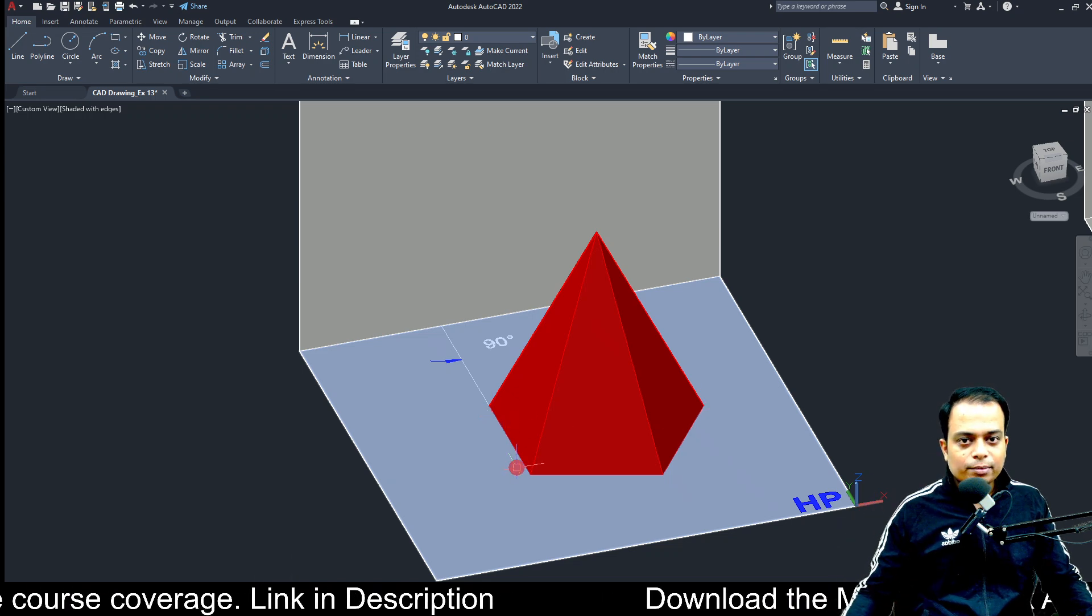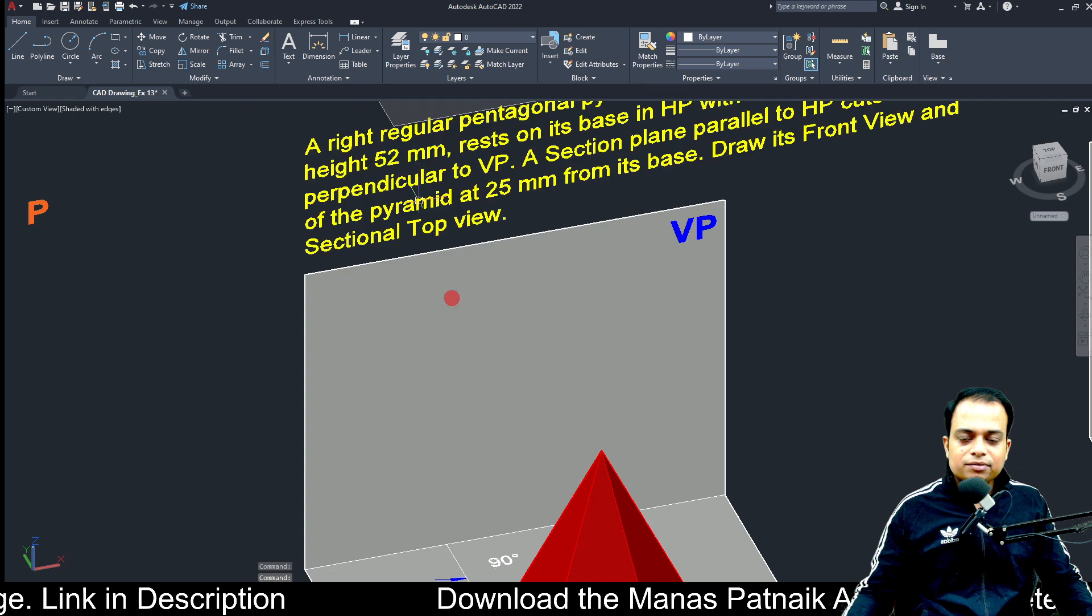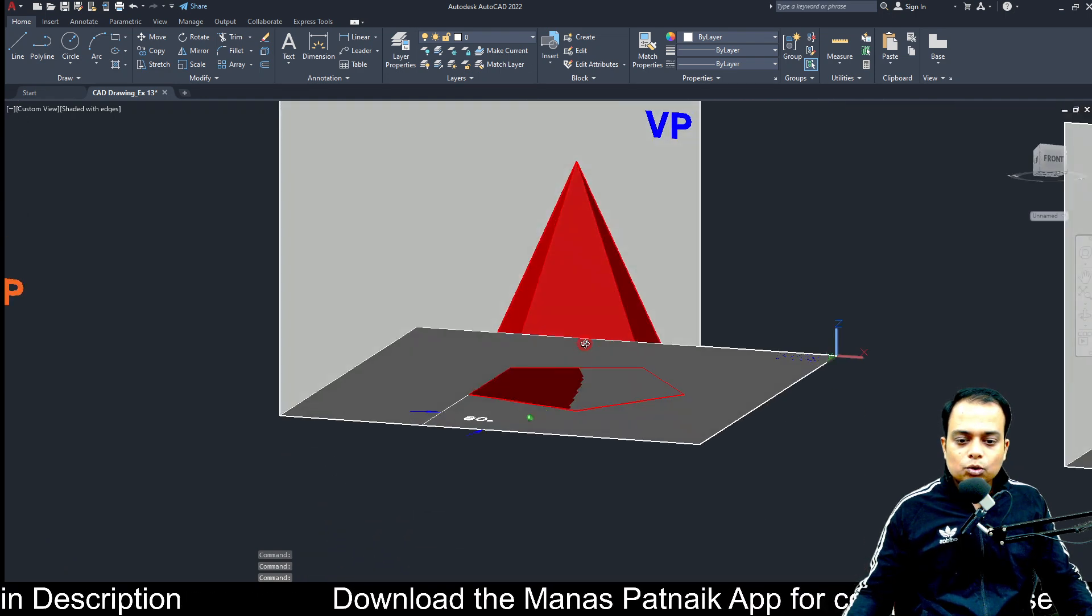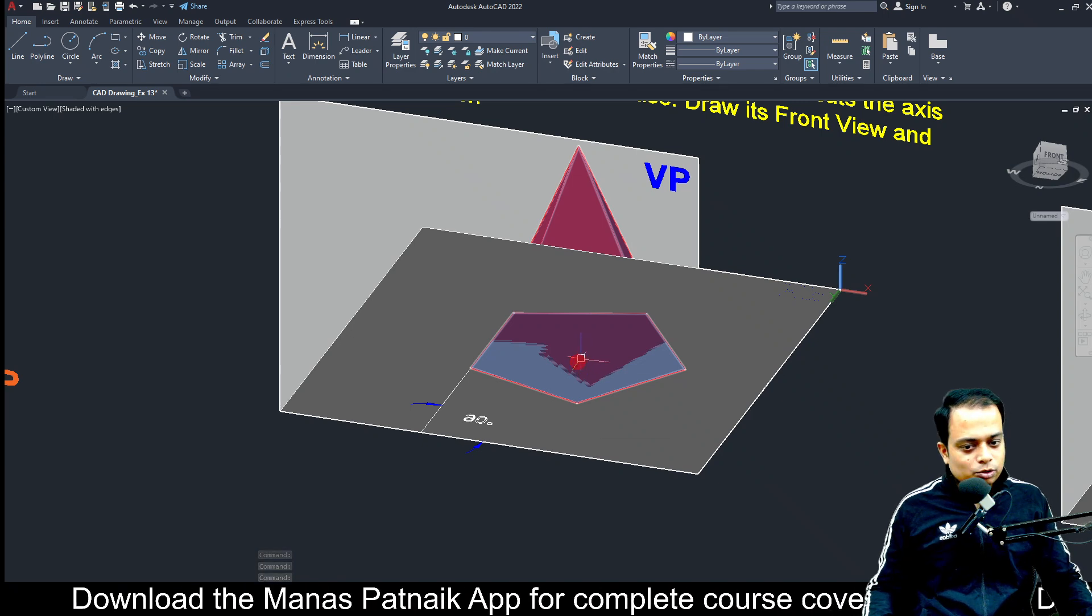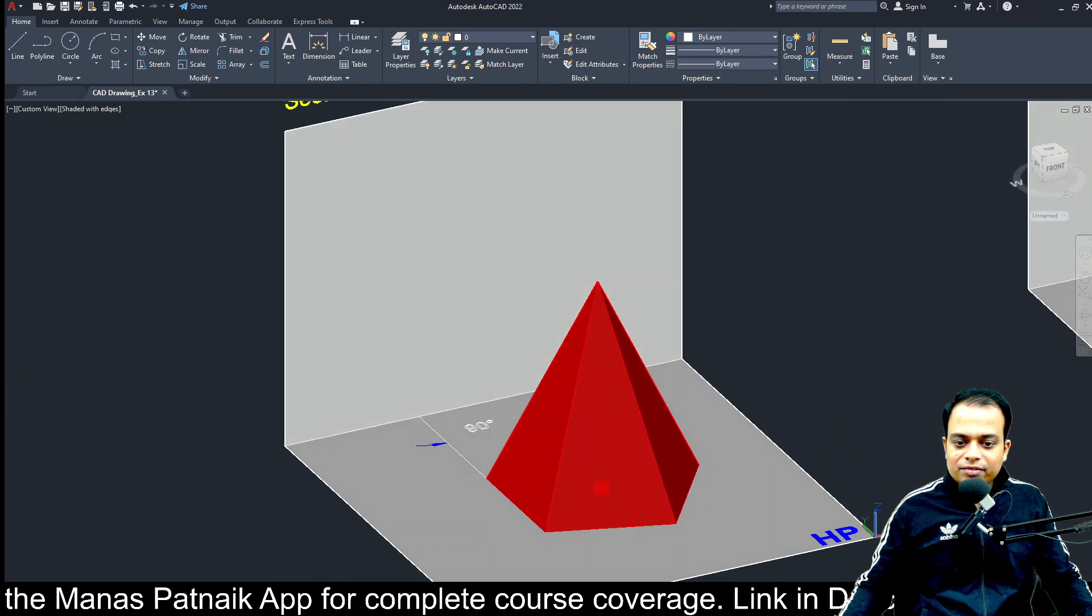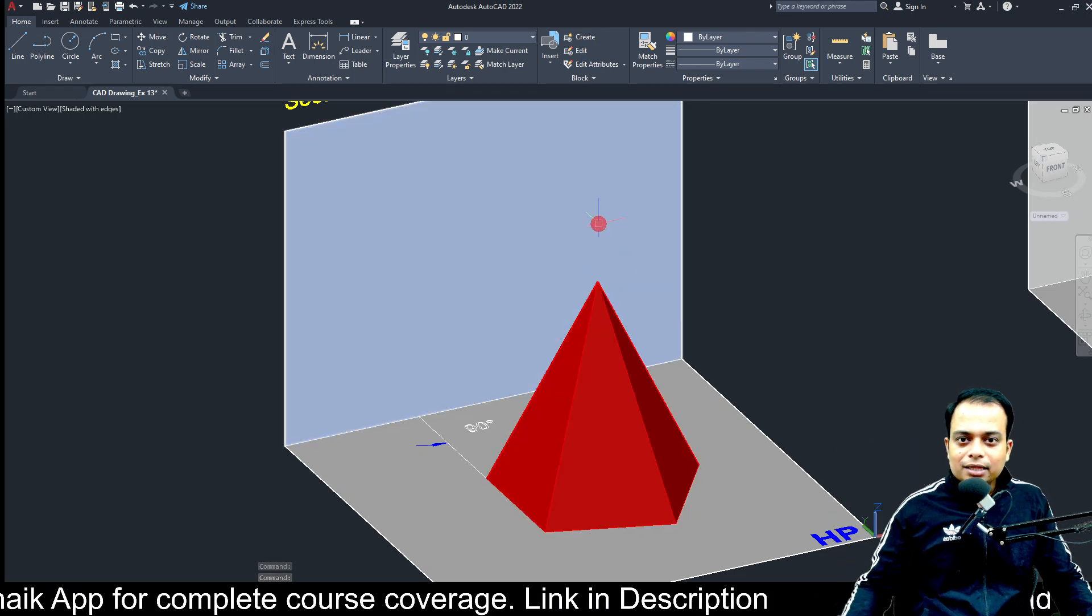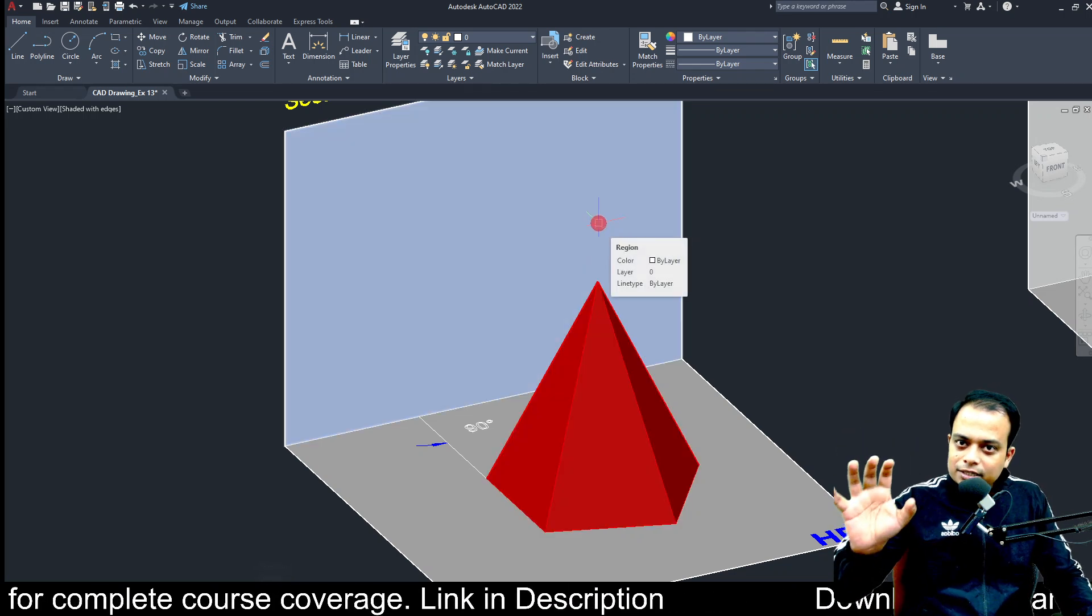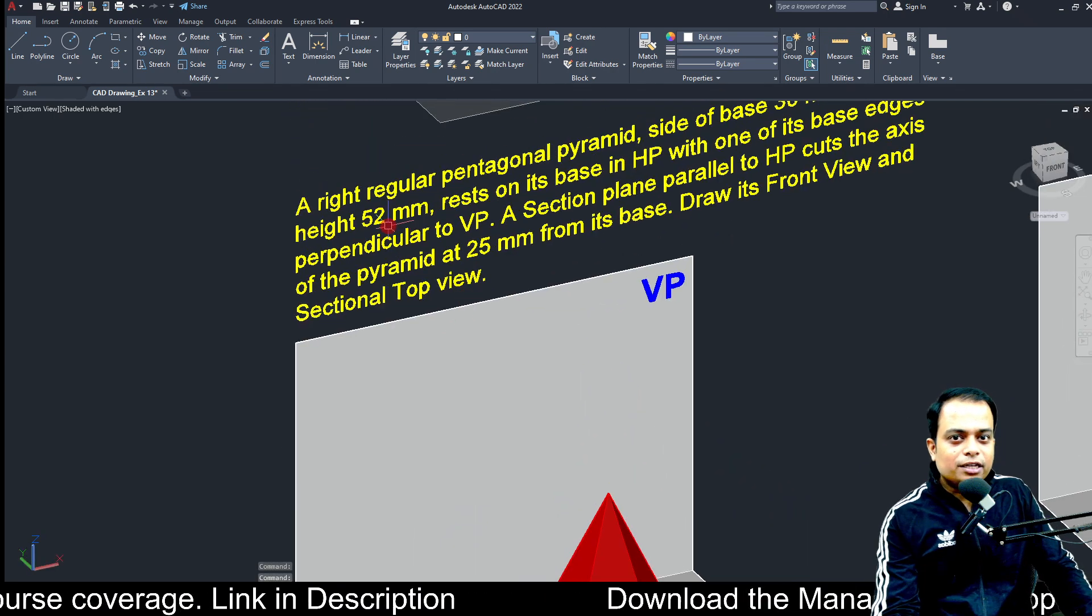Let me demonstrate - these are what you call base edges. How many base edges are there at the base? Five. All of them are 30 millimeters each. Secondly, the height of the pyramid is 52. What is this height? This is a pentagonal base, a regular geometry. It has its center somewhere here, and when that center is connected with the apex or the top of the pyramid, the line through which you connect is known as the axis, and the length of that axis has been given as 52.